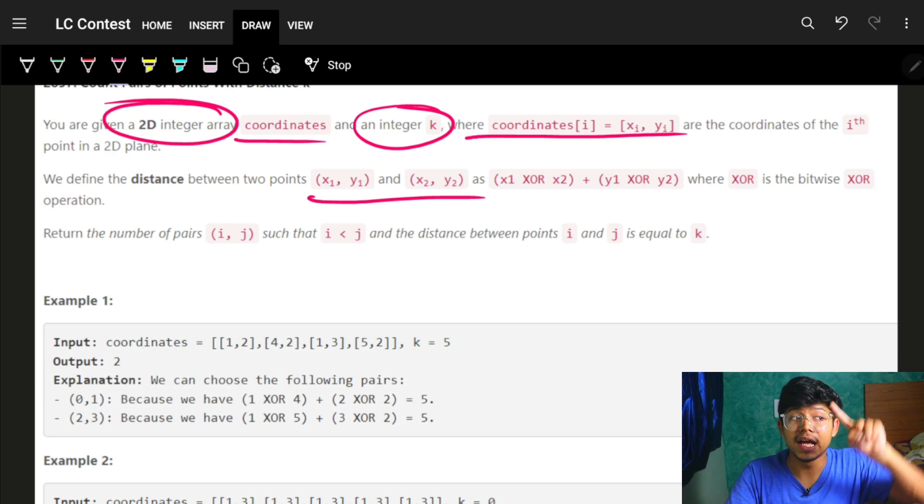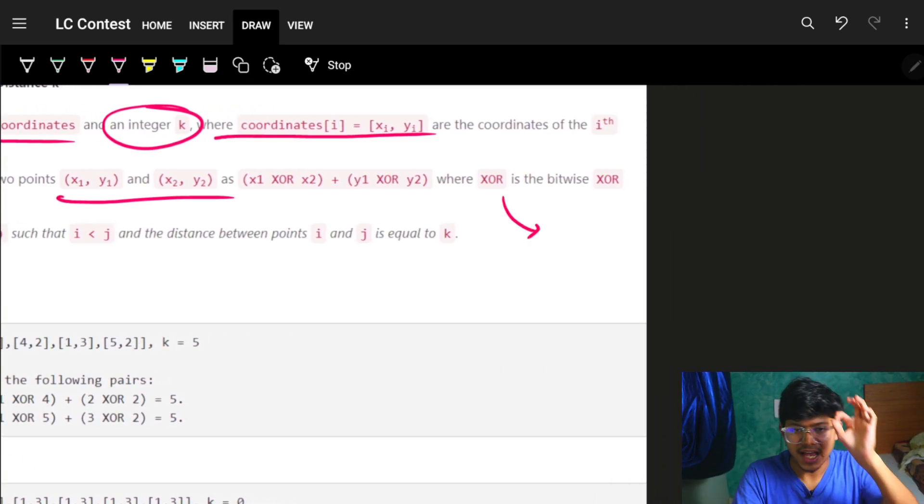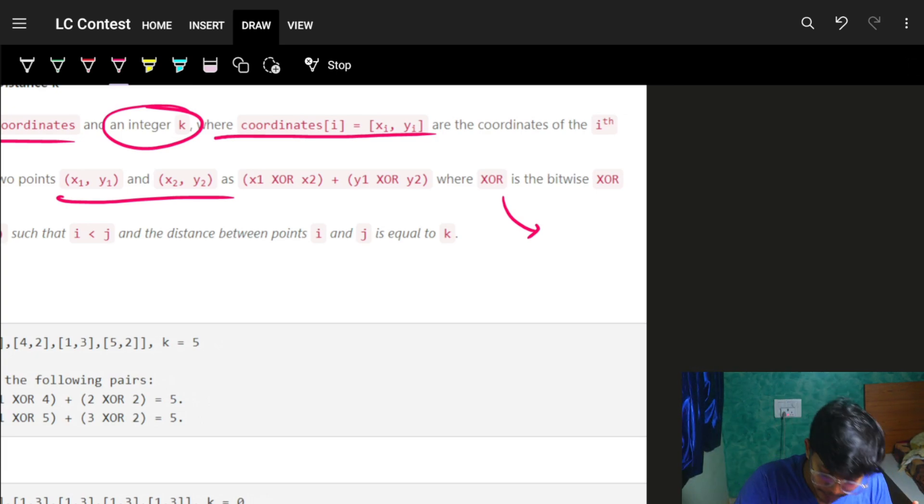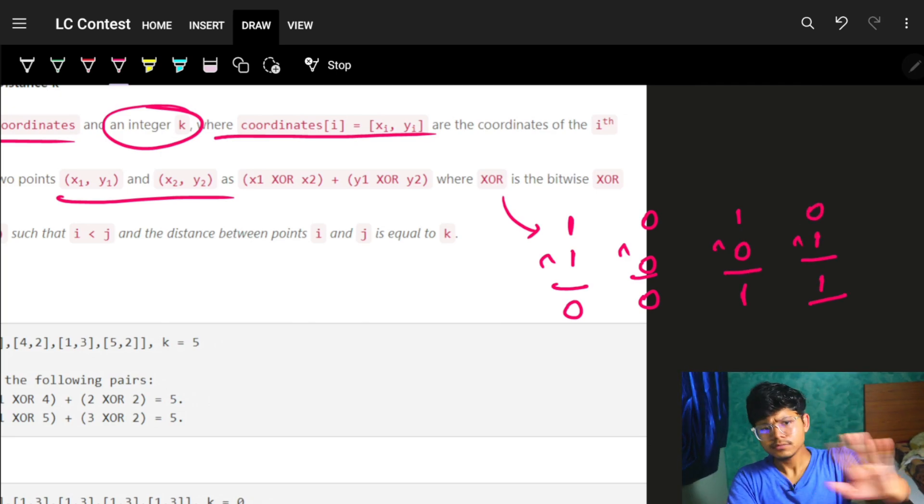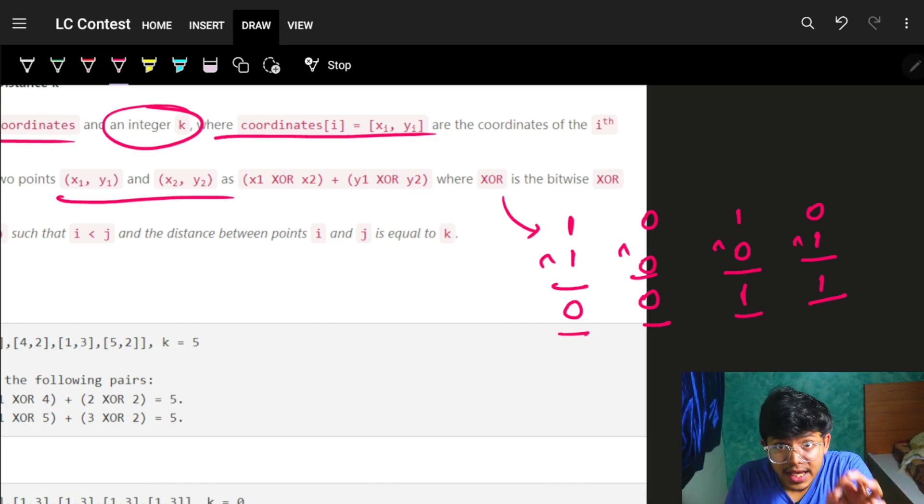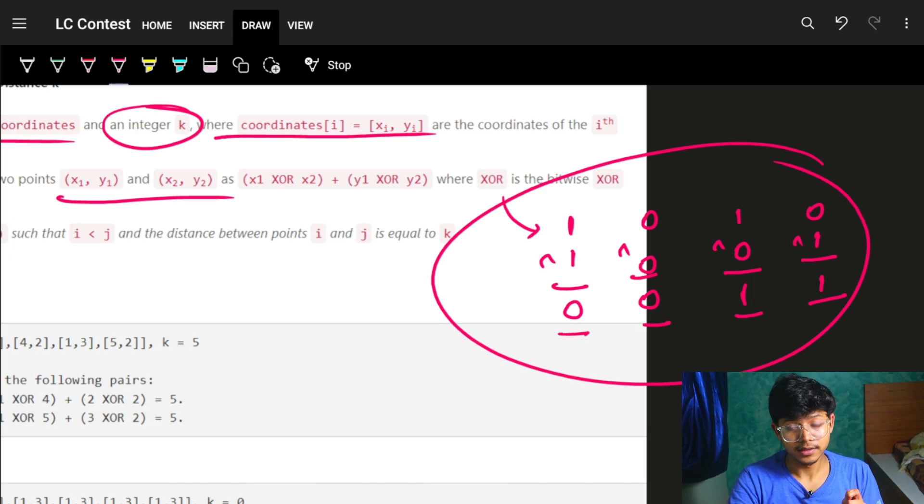As soon as XOR operations come up, start thinking in binary representation of numbers where 1 XOR 1 is 0, 0 XOR 0 is 0, 1 XOR 0 is 1, and 0 XOR 1 is 1. Simple. I haven't even fully read the problem yet, but again, start thinking in binary form, even though this won't be directly used.